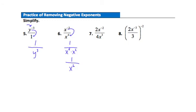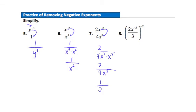Question 7: the x to the negative second needs to move down to the denominator. That gives 2 in the numerator over 4x to the third times x to the second. Simplifying: x to the third times x to the second gives x to the fifth, and 2 over 4 simplifies to 1 half. Final answer: 1 over 2x to the fifth power.